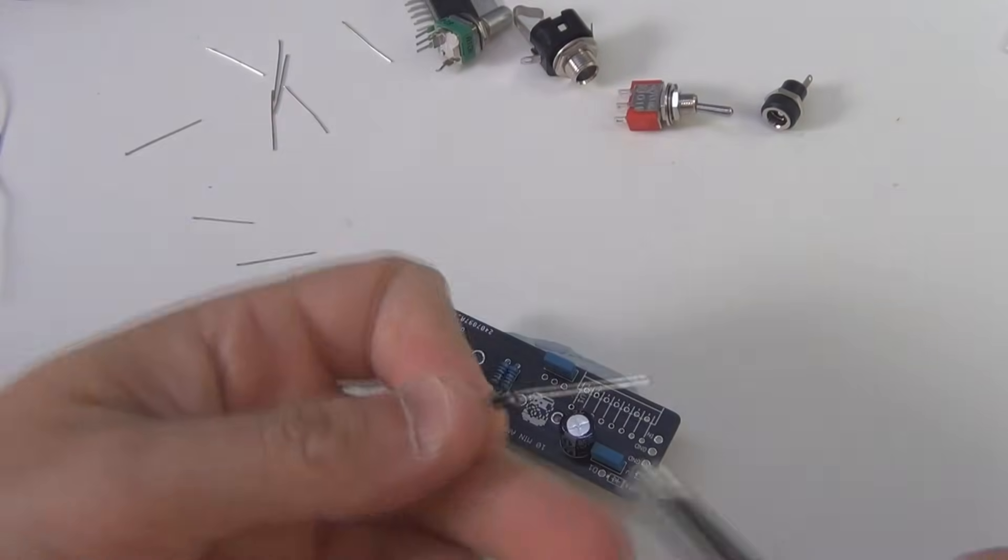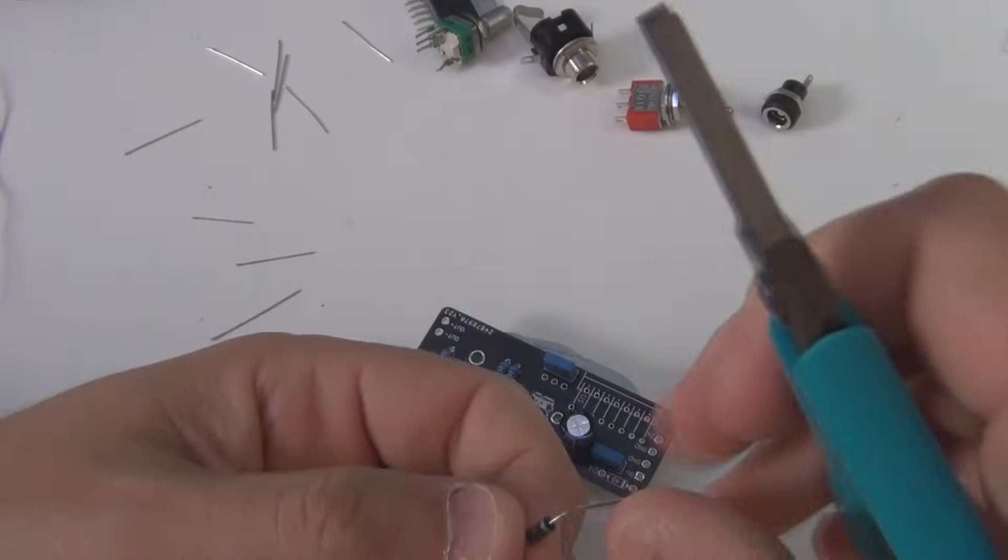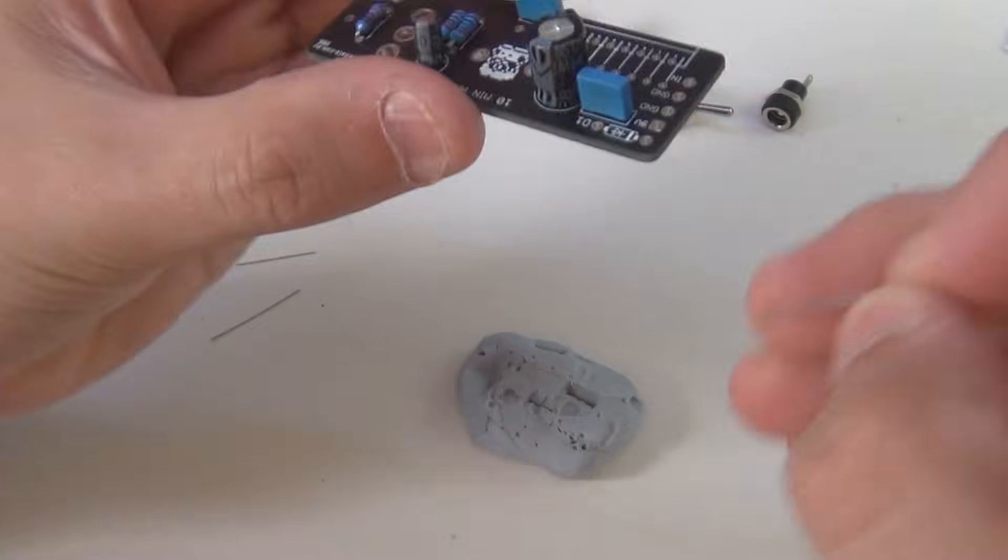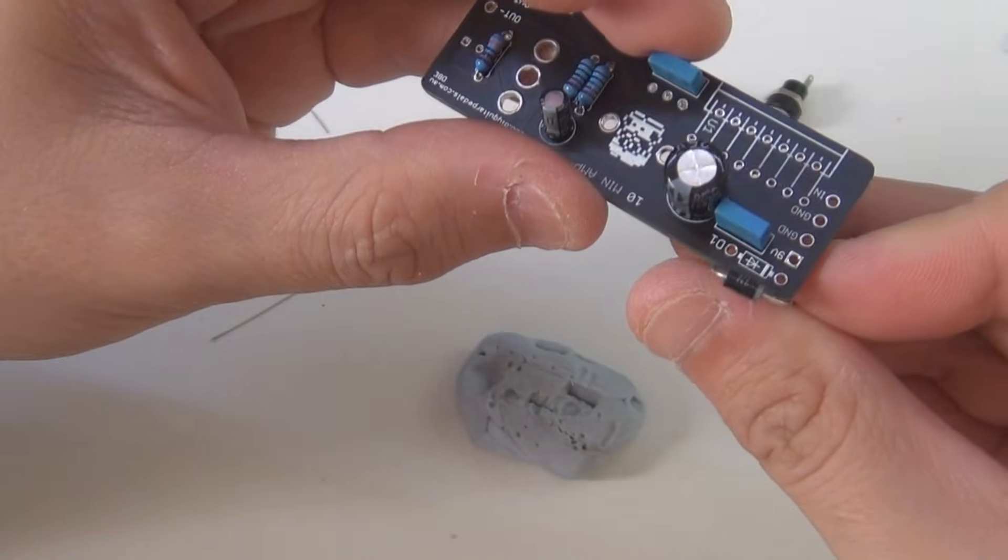Next we'll do the diode, and the diode is polarized as well, so just make sure that you put the stripe on this one, the stripe matches up with the stripe, so you'd be putting it in this way.